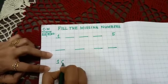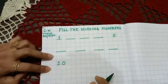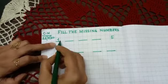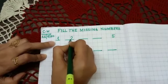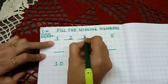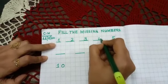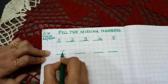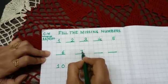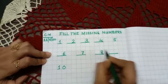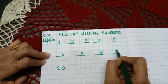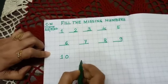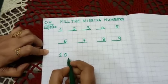So how you will write? First is 1, then which number will come? 2, then 3, then 4, 5, then comes 6, then 7, then 8, then 9, and 10. Okay children, practice more at home. Okay, thank you.